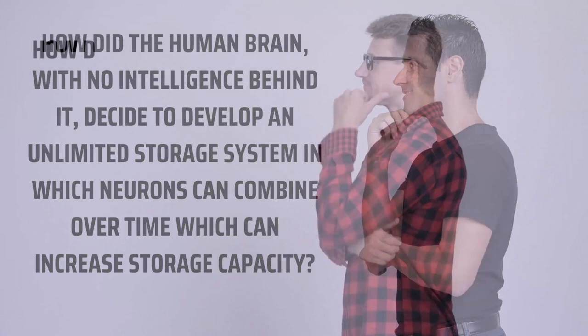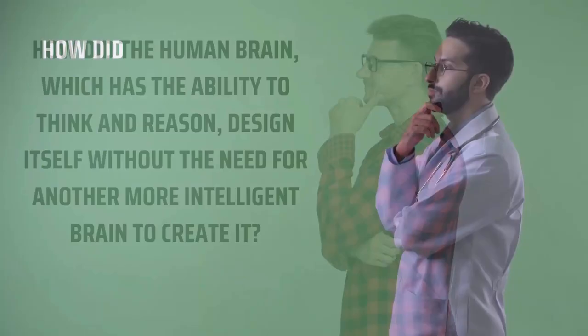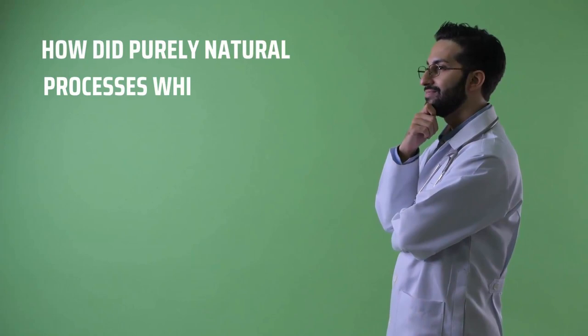How did the human brain, which has the ability to think and reason, design itself without the need for another more intelligent brain to create it? How did purely natural processes, which do not think and cannot reason, cause the human brain, which can think and can reason?